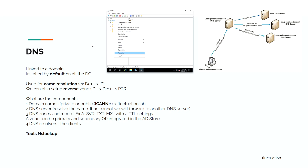When you install your first DC, DNS is installed by default and it's used for name resolution. The first goal of DNS is to link a computer name to an IP address. But you can also do a reverse — what is a reverse zone? It's the pointer, meaning that from an IP, you can find the computer name. We talk about PTR records. PTR is a way that you can have this reverse zone.